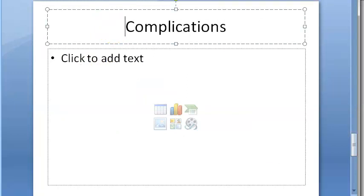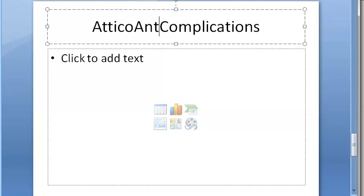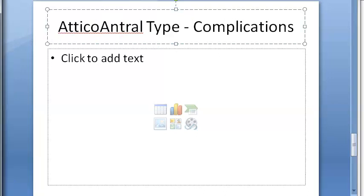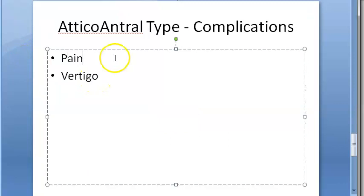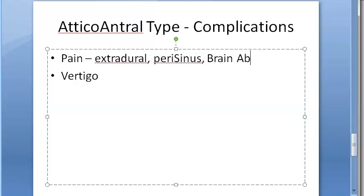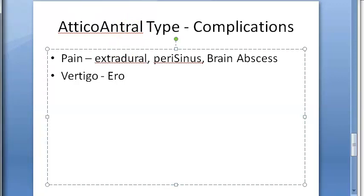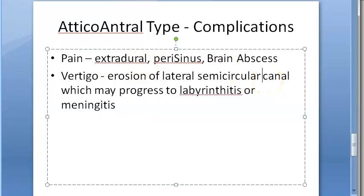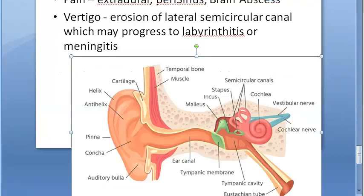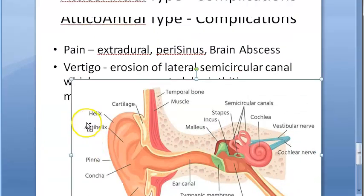There are also symptoms that indicate complications in atticoantral type CSOM. Pain can indicate extradural, perisinus, or brain abscess - though it may also be due to associated otitis externa; otherwise its presence is considered serious. Vertigo can indicate erosion of the lateral semicircular canal, which may progress to labyrinthitis or meningitis; a fistula test should be performed to check this.